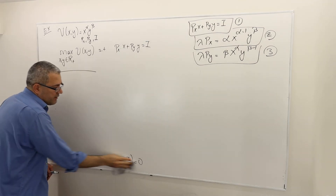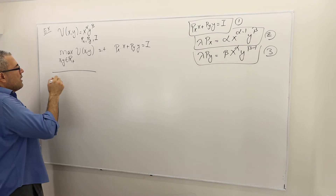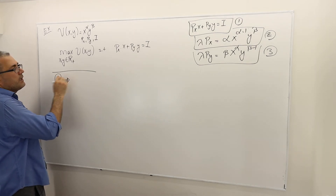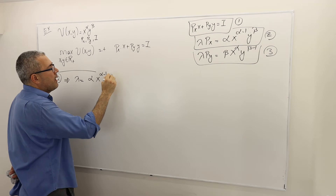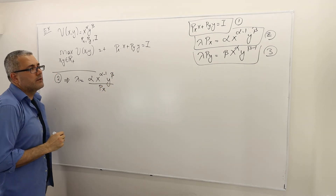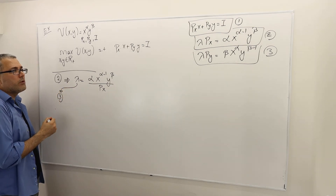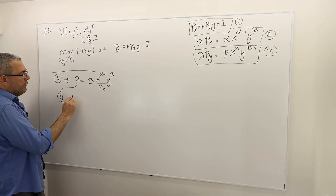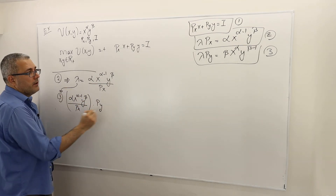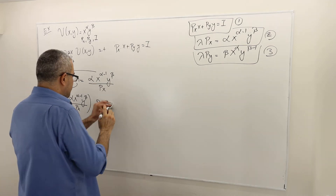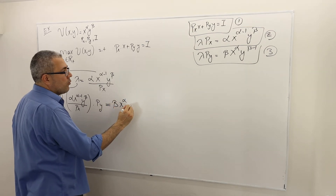We have three equations and three unknowns, and we can solve them as we wish. From equation 2, lambda = alpha * x^(alpha-1) * y^beta / px. I'll plug this into equation 3, so equation 3 becomes: alpha * x^(alpha-1) * y^beta / px * py = beta * x^alpha * y^(beta-1).